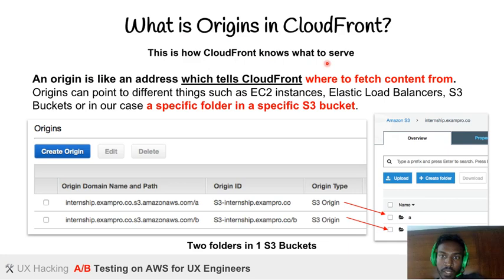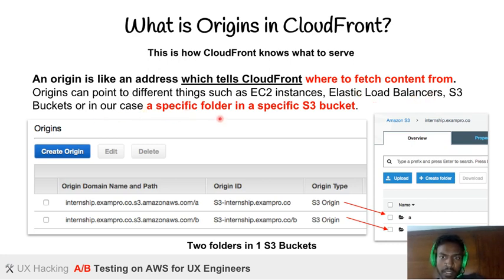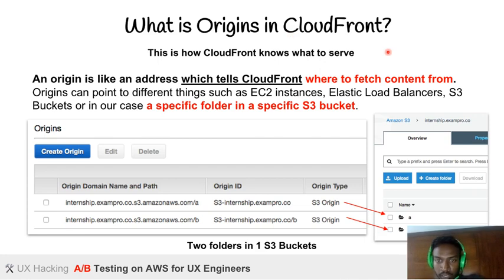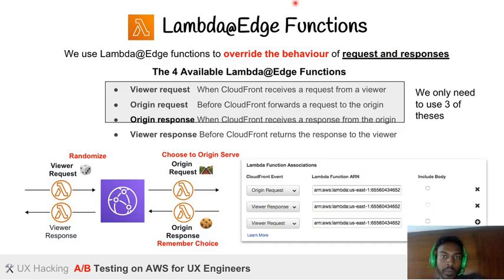An origin in CloudFront is an address that tells CloudFront where to fetch content from. Origins can point to different things such as EC2 instances, Elastic Load Balancers, S3 buckets, or in our case, a specific folder in a specific S3 bucket. We're using just one S3 bucket, splitting into two folders for the two prototypes, and attaching an origin address to A and B respectively.